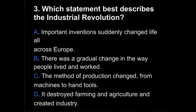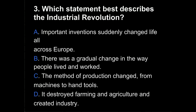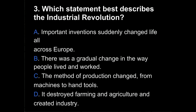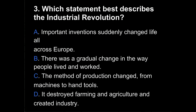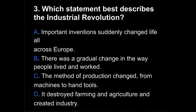Question 3. Which statement best describes the Industrial Revolution? Is it A, important inventions suddenly changed life all across Europe? B, there was a gradual change in the way people lived and worked? C, the method of production changed from machines to hand tools? Or D, it destroyed farming and agriculture and created industry?